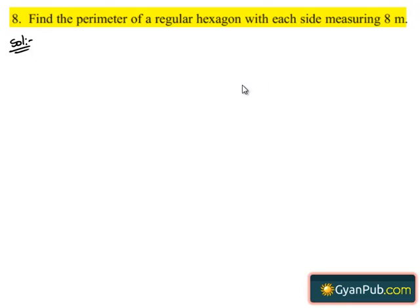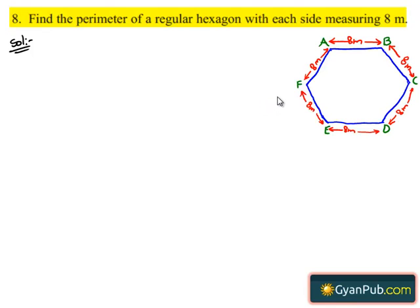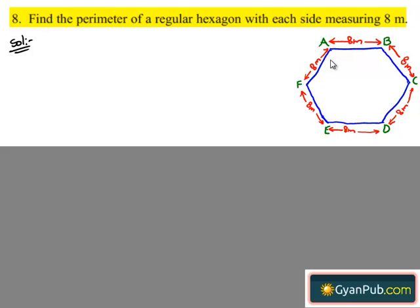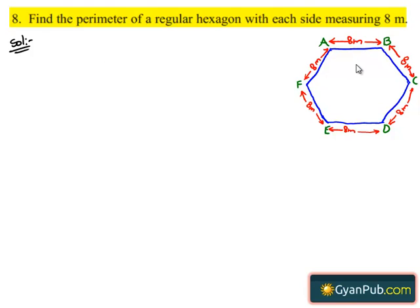So first let us consider a regular hexagon. Here is the regular hexagon ABCDEF with each side measuring 8 meters. We have to find the perimeter of the regular hexagon.